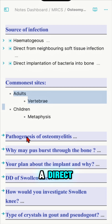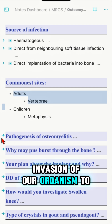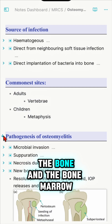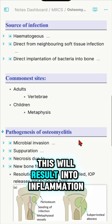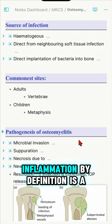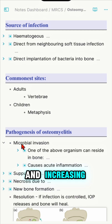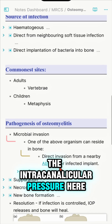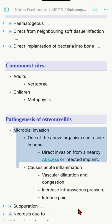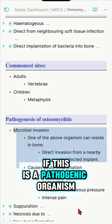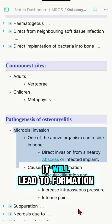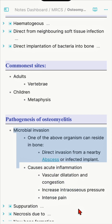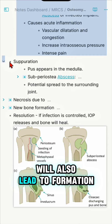It starts with direct invasion of an organism to the bone and bone marrow, which results in inflammation — defined as vasodilatation of the blood vessels and increasing the intraosseous pressure — leading to intense pain. If this is a pyogenic organism, it leads to formation of pus, or suppuration.